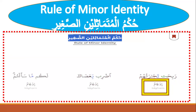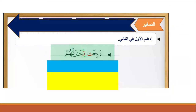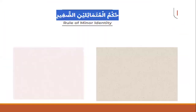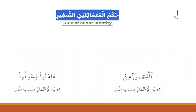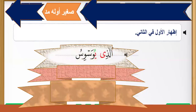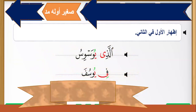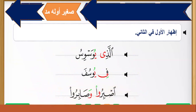For idgham: اضرب بعصاك and لكم ما سألتم — it's idgham. Regarding the rule of manner identity: when the first letter is a mad letter, you should make it hard (apply idgham). Examples: الذي يؤمنوا آمنوا وعملوا, الذي يوسوس في يوسوفه, اصبروا وصابروا. This is minor identity that begins with mad — idgham is applied to both letters.